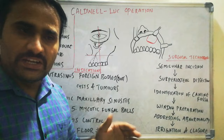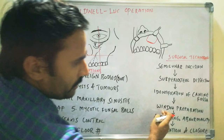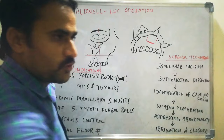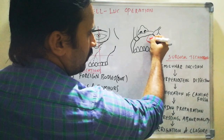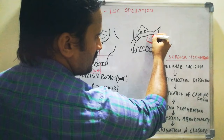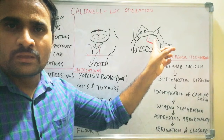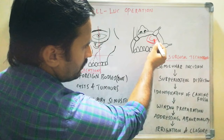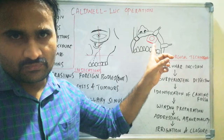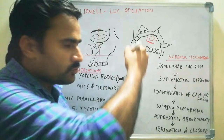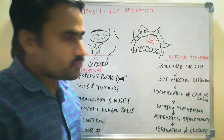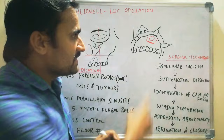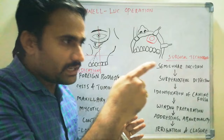After identification of the Canine Fossa, you prepare a bony window. You follow the postage stamp method — preparing small holes in the bone and then connecting them to remove the bone in between. After removing the bone, you enter into the Maxillary Sinus. This opening should be sufficient enough to pass an index finger, so that you can feel any abnormality or cystic tumors in the Maxillary Sinus.